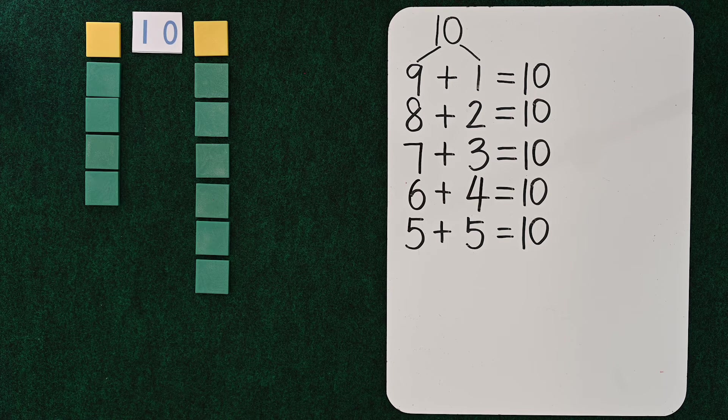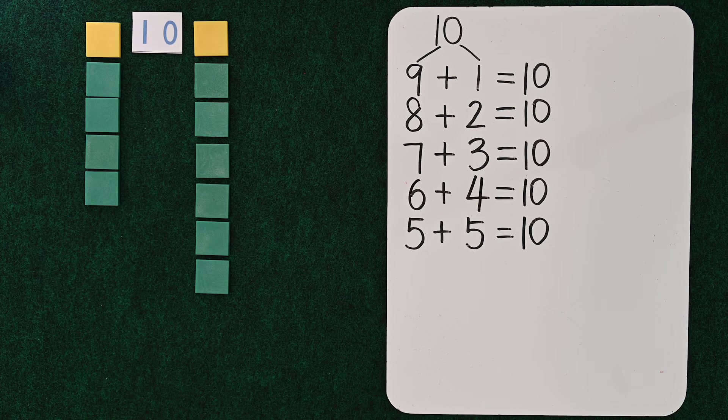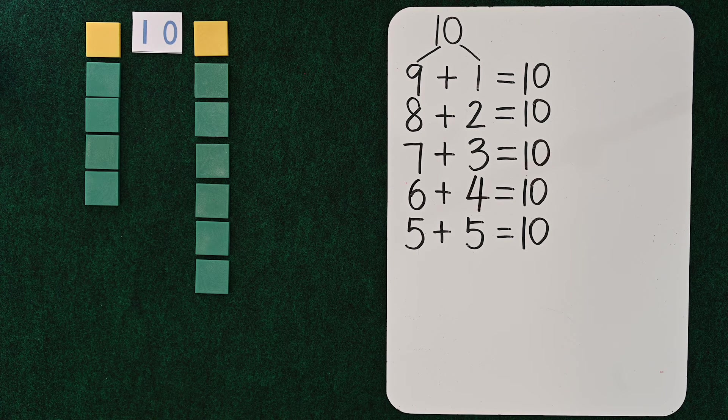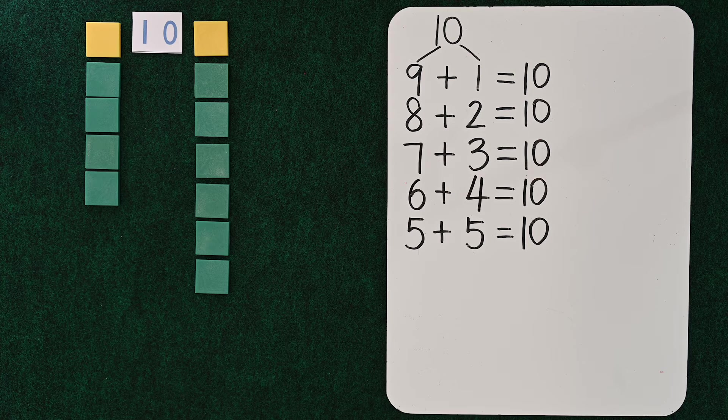It's 6 plus 4 equals 10. 4 plus 6 equals 10. Some people call that commutative property. Can you say commutative property?